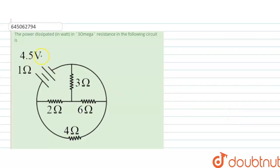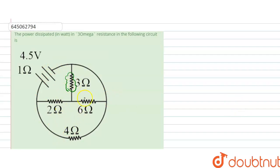The question is: find the power dissipated in watts in the 3 ohm resistance in the following circuit. We have the circuit representation and we need to find the power dissipated in the 3 ohm resistance. Let's draw another diagram for better understanding of the circuit.